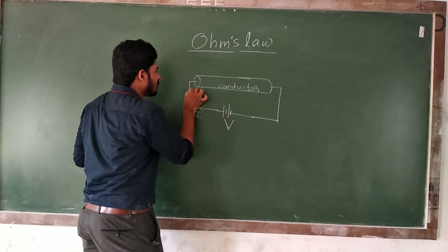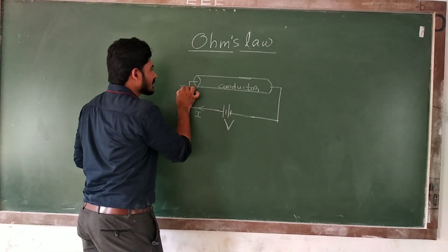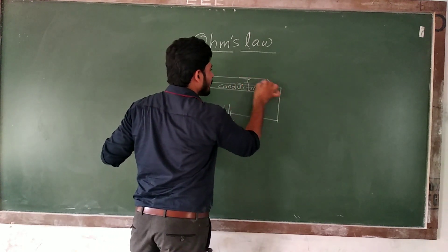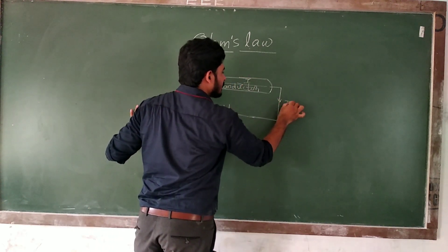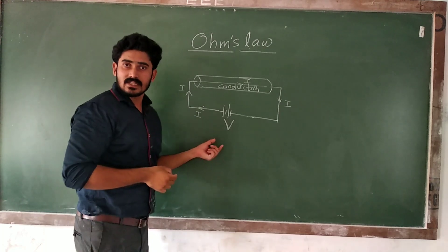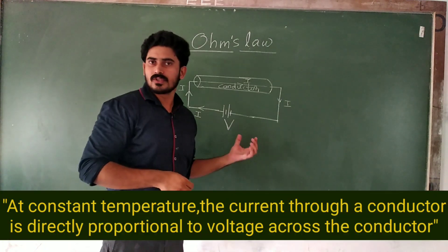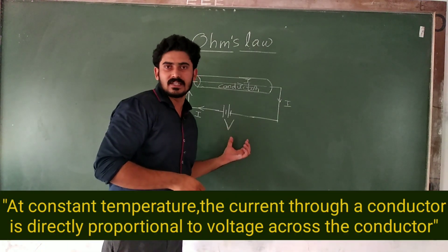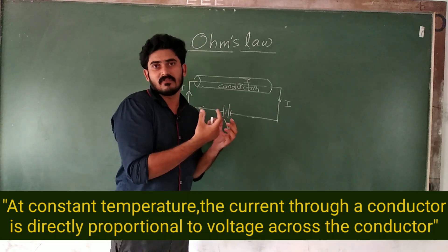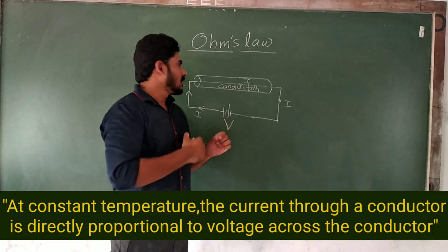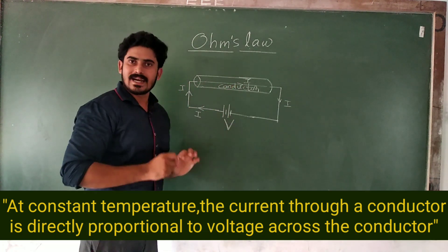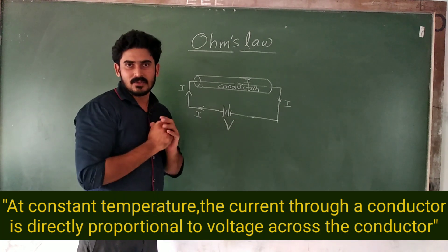A current I will be flowing through this conductor. A current I will be flowing through this conductor as a result of the voltage we are given here. This is a conductor — electric current passing.